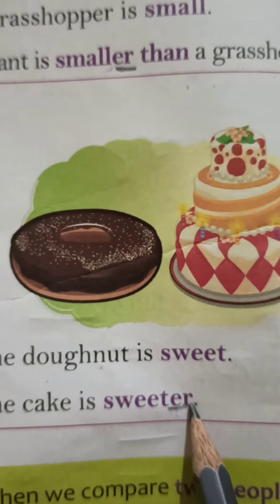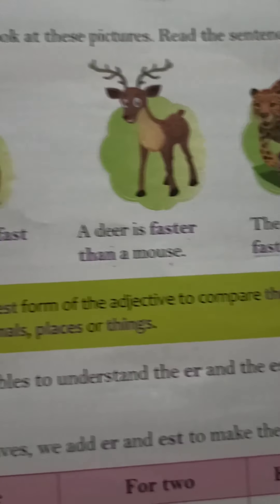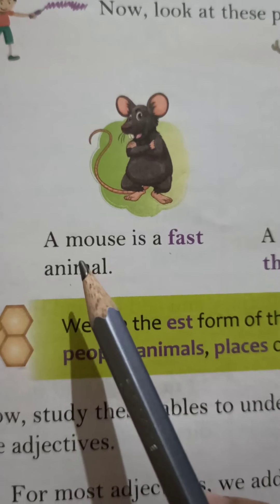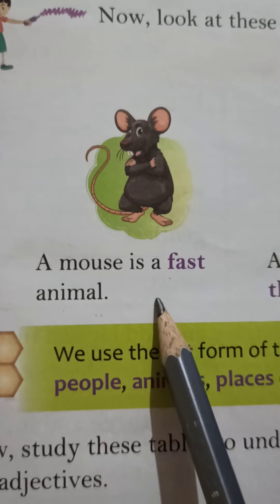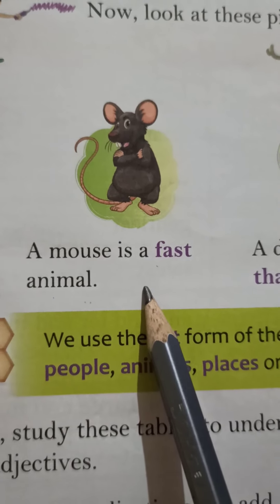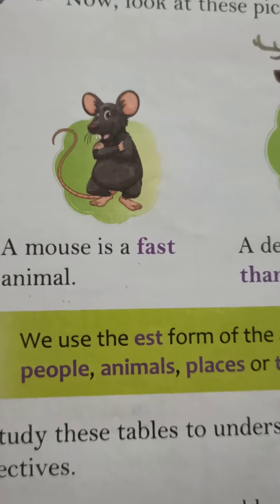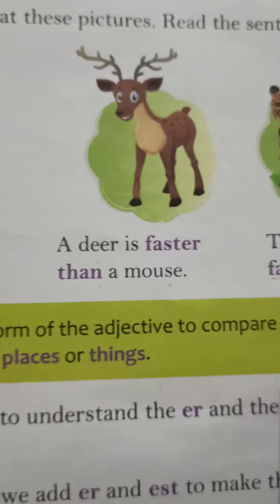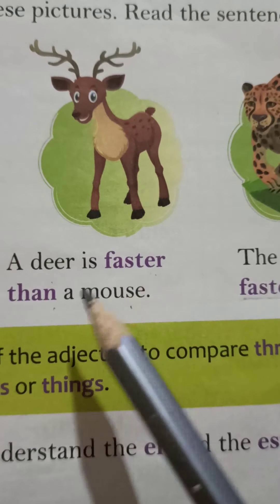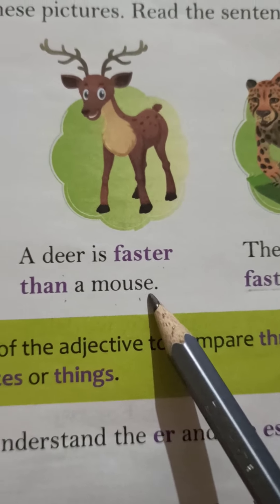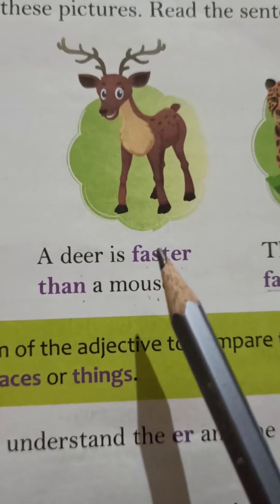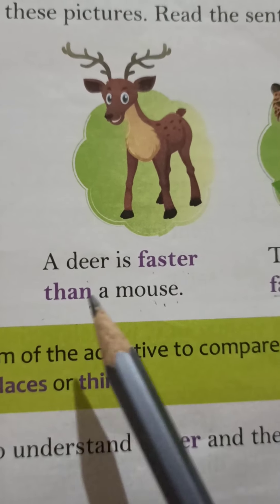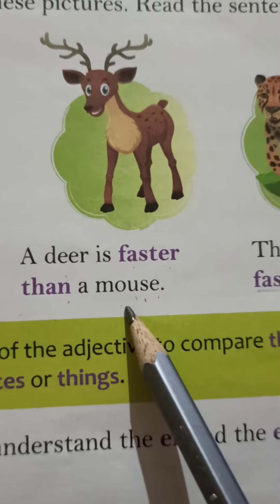Now look at these pictures and read the sentences. A mouse is a fast animal — mouse एक fast animal है, बहुत तेज तेज वो भागता है. A deer is faster than a mouse — हमने mouse और deer को compare किया, तो deer, mouse से भी faster हुआ.